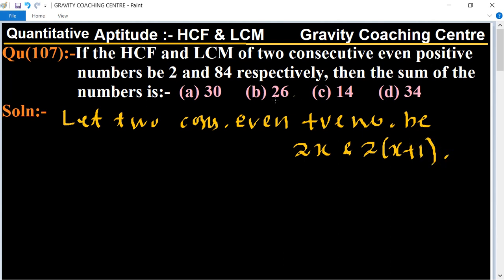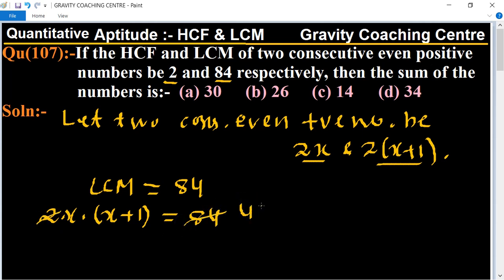According to the question, HCF is given 2 and LCM equal to 84. So LCM is given 84, and the LCM of the two numbers equal to 2 multiply x multiply (x+1) equal to 84. So 84 is cancelled by 2, giving 42. So x and (x+1) equal to 42.